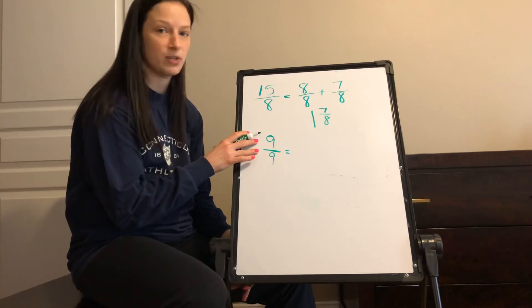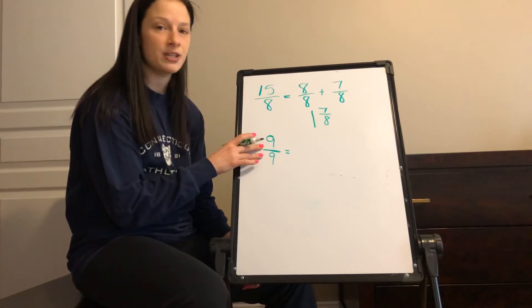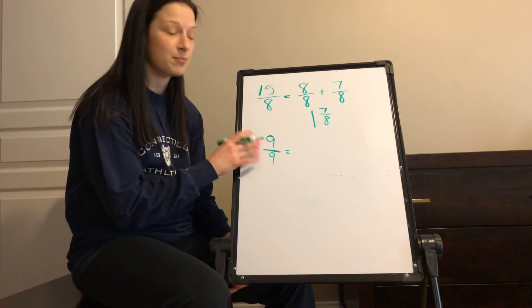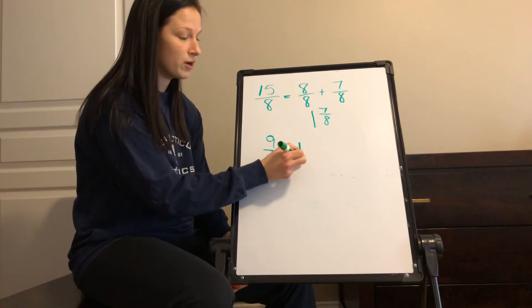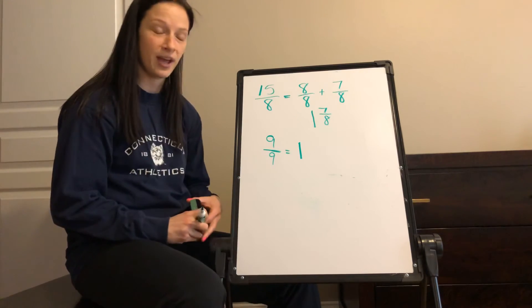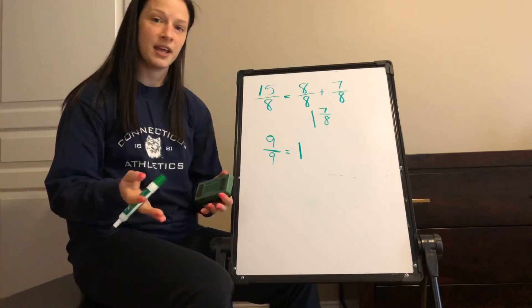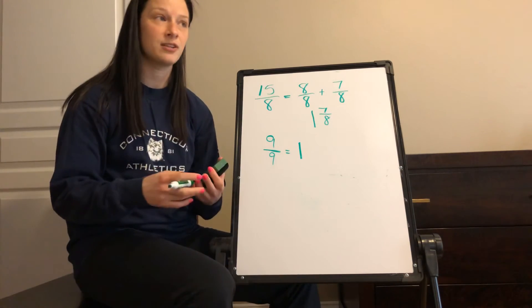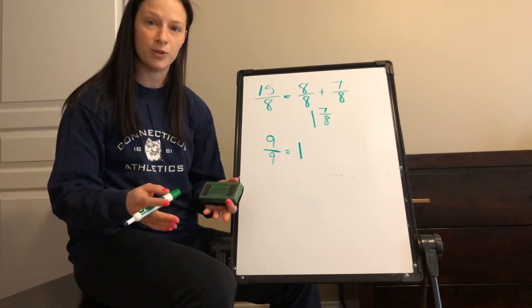The last product we had was nine-ninths. Again, when the numerator and denominator are the same you have exactly one whole. So nine-ninths equals one whole.